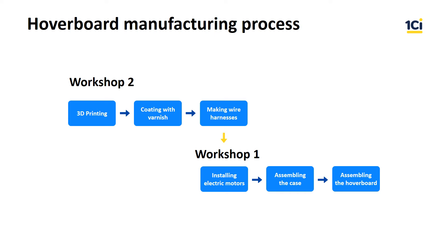The hoverboard manufacturing process is as follows: printing the footboard and the autocase on a 3D printer; coating the footboard and autocase with varnish; making wire harnesses; installing electric motors in the wheels; assembling the hoverboard case; installing the motherboard and battery on the aluminium frame and connecting them using the harness; installing the footboard and the autocase; assembling the hoverboard and mounting the wheel kit onto the case; installing the rear lights if necessary.